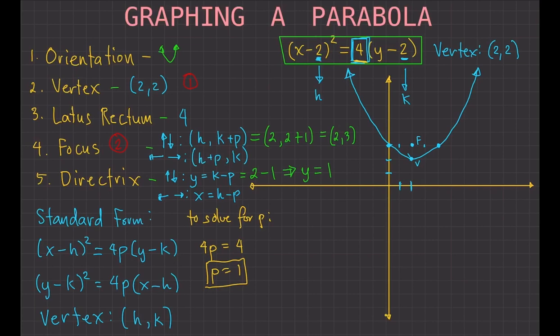There is one more thing — the directrix. The directrix is y equals 1, which is a horizontal line drawn at y equals 1 below the vertex. That is the directrix of the parabola. That's how you graph a parabola on the Cartesian plane.